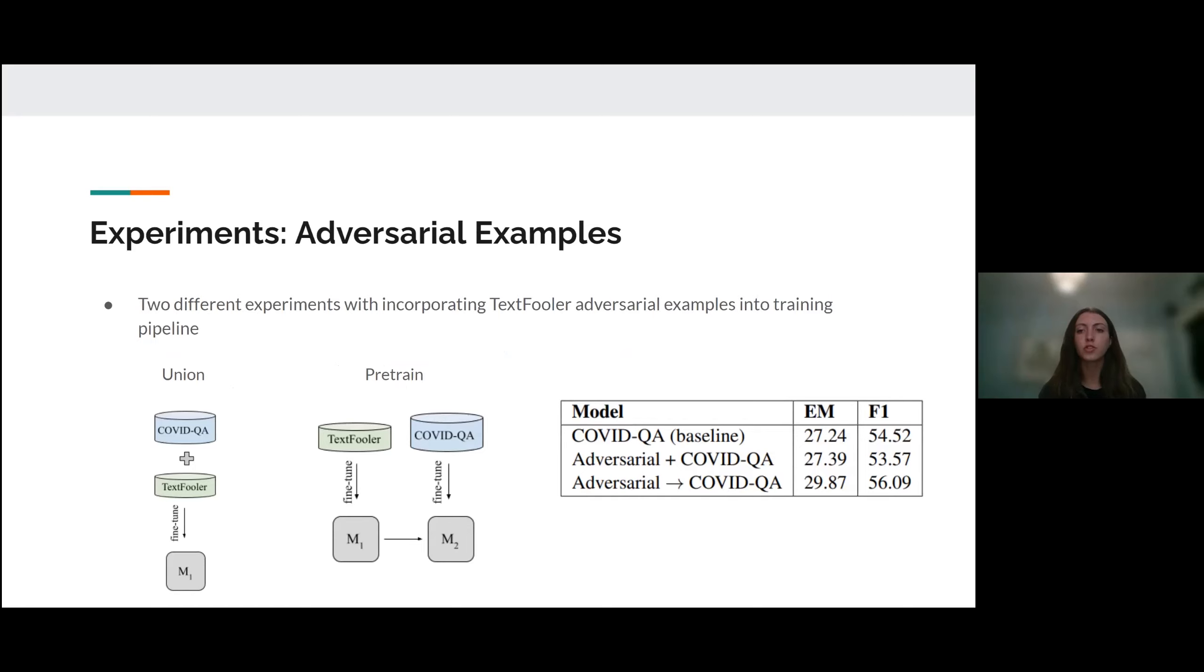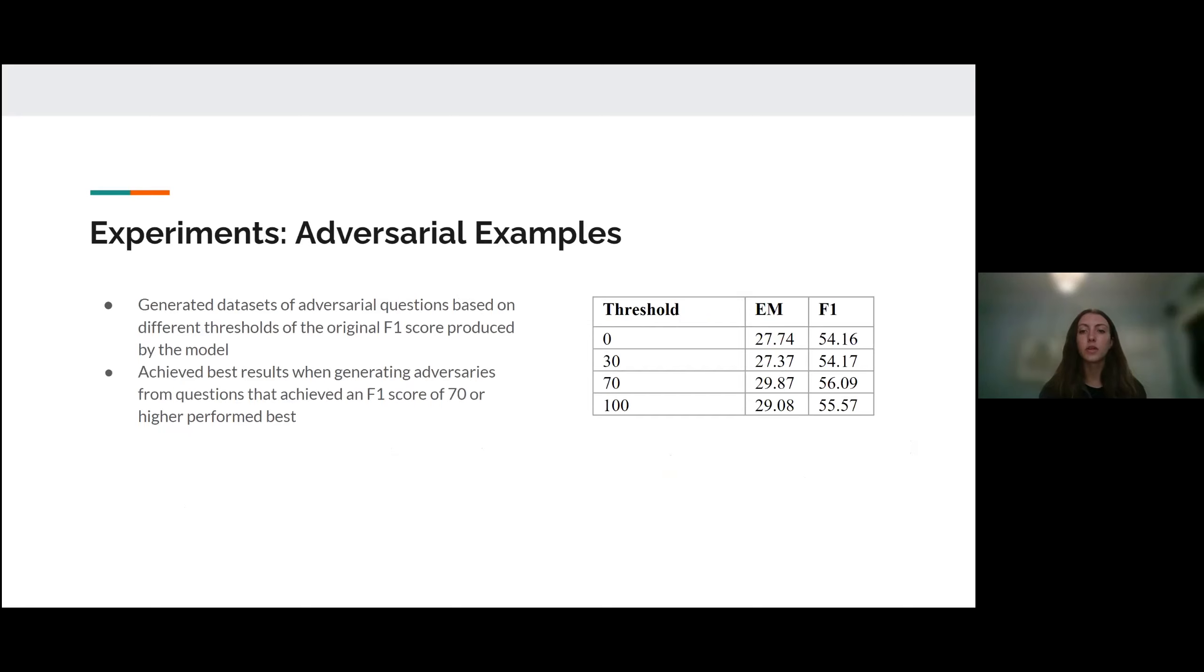So we experimented with two different ways to incorporate the adversarial examples we generated using TextFooler into the training pipeline. The first was training on the union of the two sets and the second was first pre-training on the adversarial data and then further fine tuning on the COVID QA data set. We found that pre-training on the adversarial data had the best results improving on the baseline by 1.5 points while training on the union of the two sets actually decreased the performance from the baseline. We generated data sets of adversarial questions based on different thresholds of the original F1 score for the prediction produced by the target model. We experimented with these different thresholds and found that producing an adversarial question for each example that the target model's prediction was 70 or higher performed best.